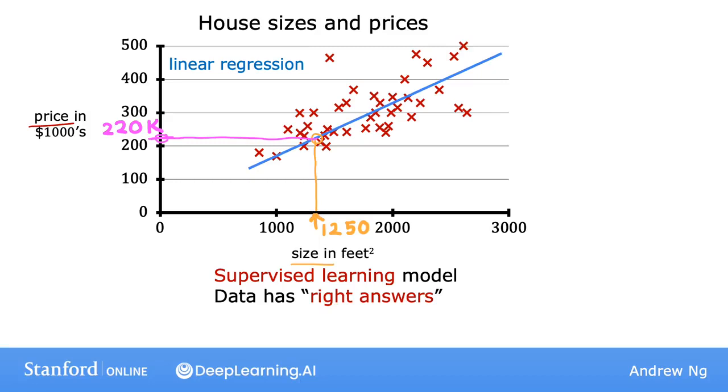This linear regression model is a particular type of supervised learning model. It's called a regression model because it predicts numbers as the output, like prices in dollars. Any supervised learning model that predicts a number such as 220,000 or 1.5 or negative 33.2 is addressing what's called a regression problem. So linear regression is one example of a regression model, but there are other models for addressing regression problems too, and we'll see some of those later in course two of this specialization.